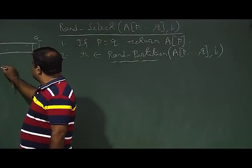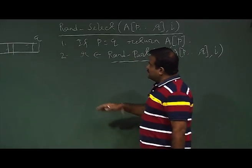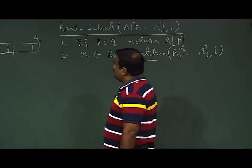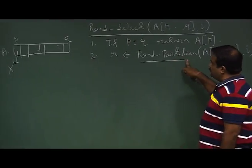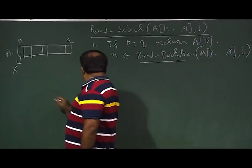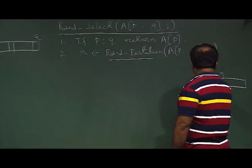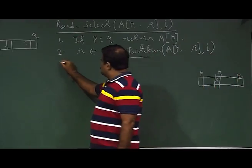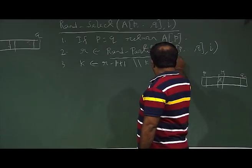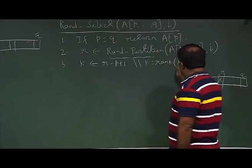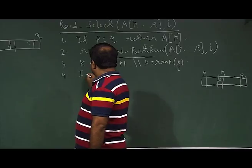We choose an index randomly from p to q, and then we use that element as the pivot. If there are n elements, they are equally likely to be chosen. The randomized partition returns r, the index where x ends up after partitioning. We then set k equal to r minus p plus 1, so k is the rank of x — the pivot element chosen randomly. The rest of the code is similar to the select algorithm from the previous lecture.